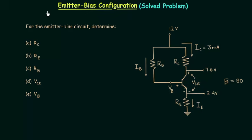In the previous presentation we completed emitter bias configuration, and in this lecture we will solve one problem based on emitter bias configuration. In this problem we need to calculate all three resistances in the emitter bias circuit: resistance RB, resistance RC, and resistance RE.